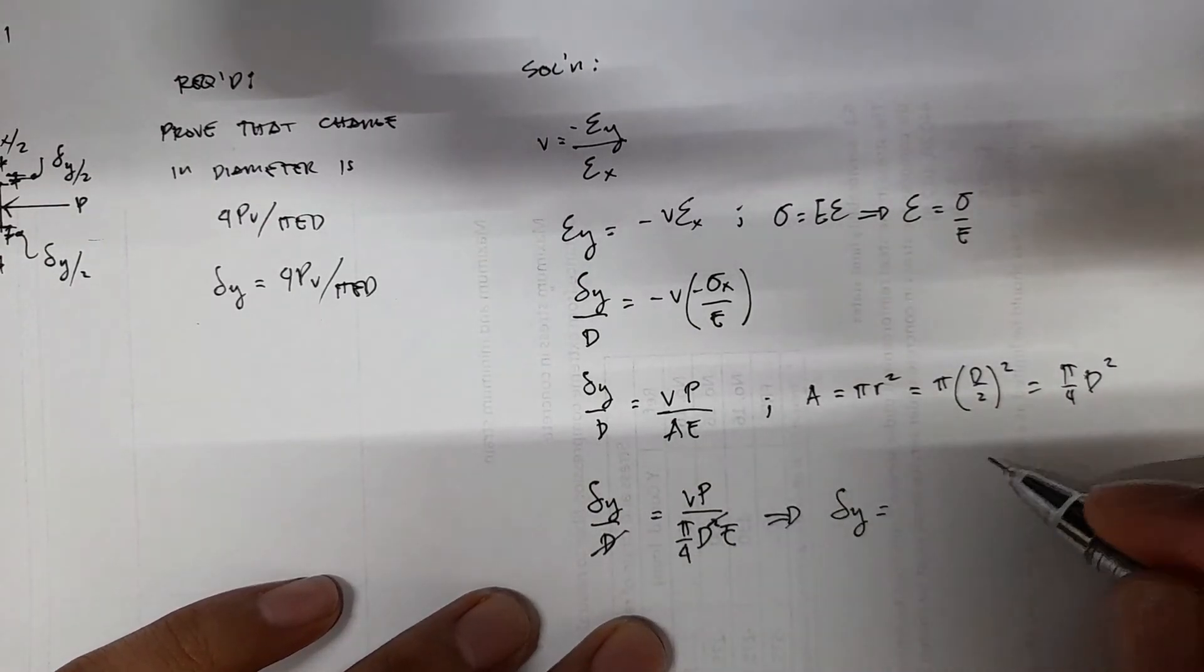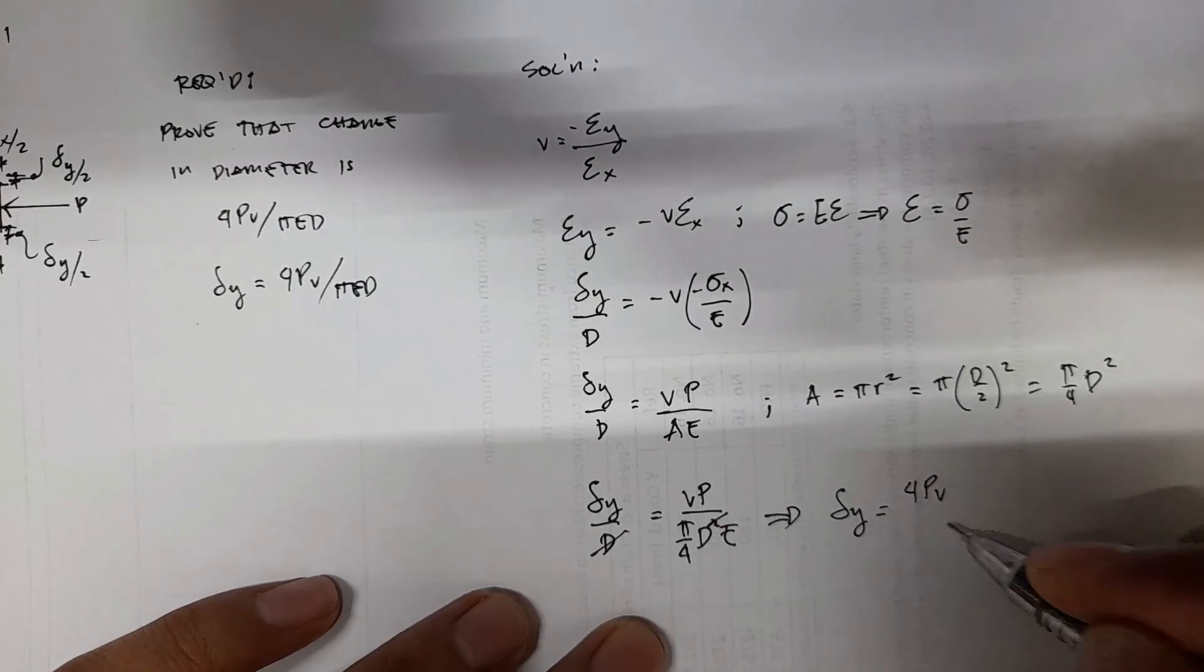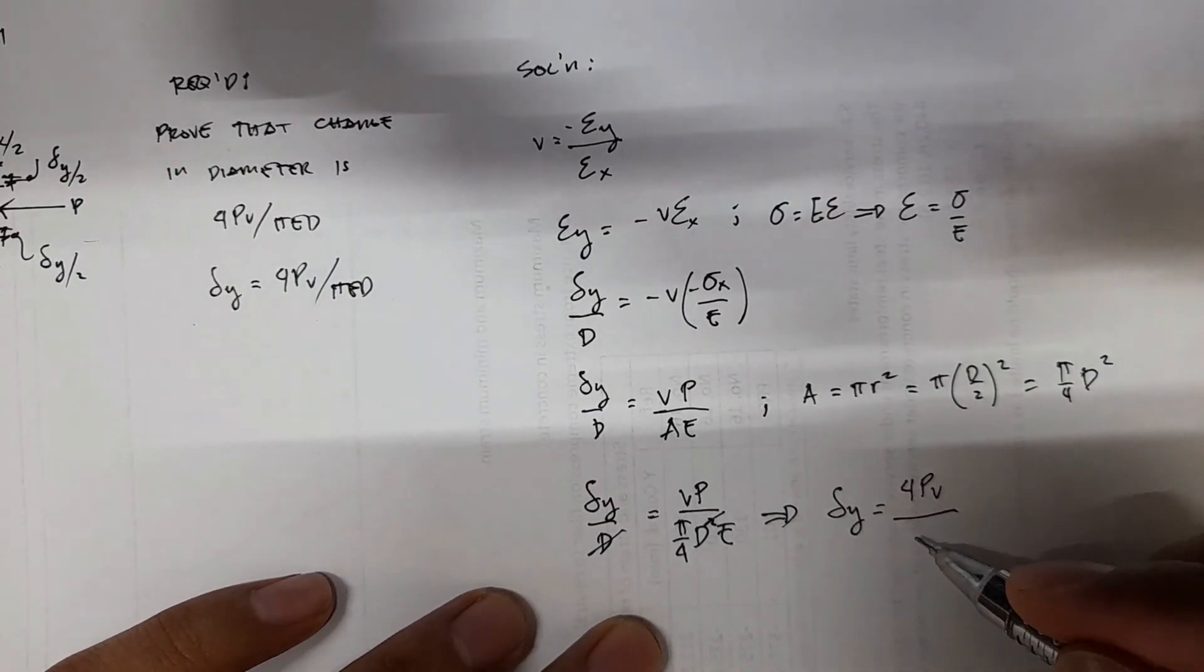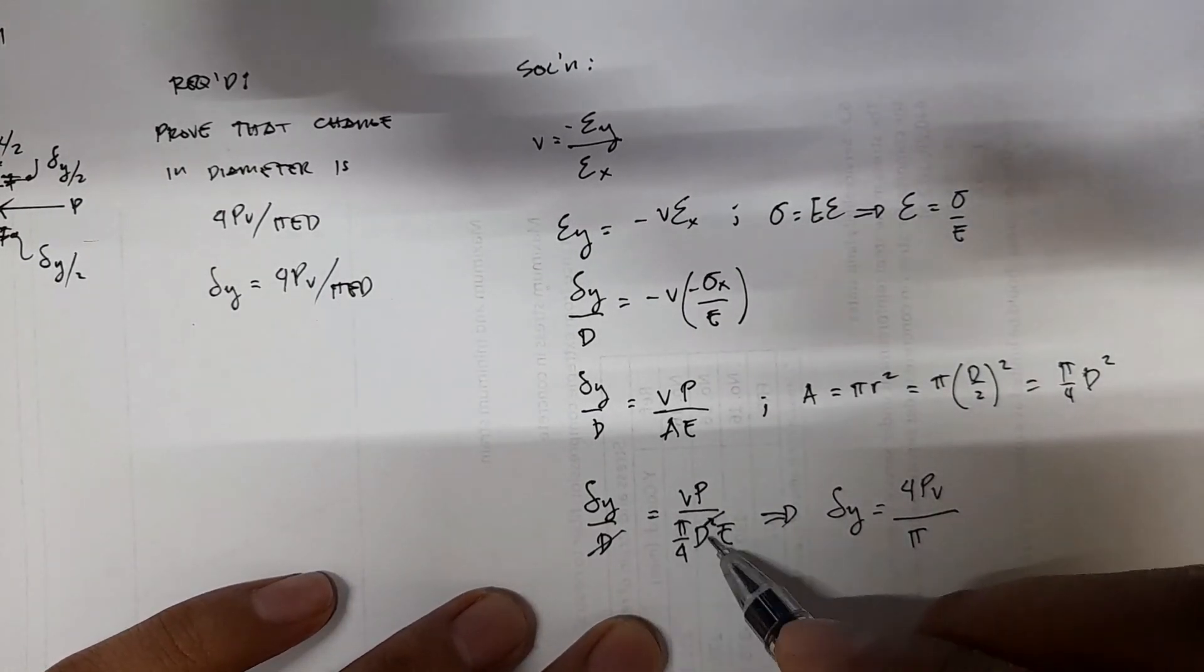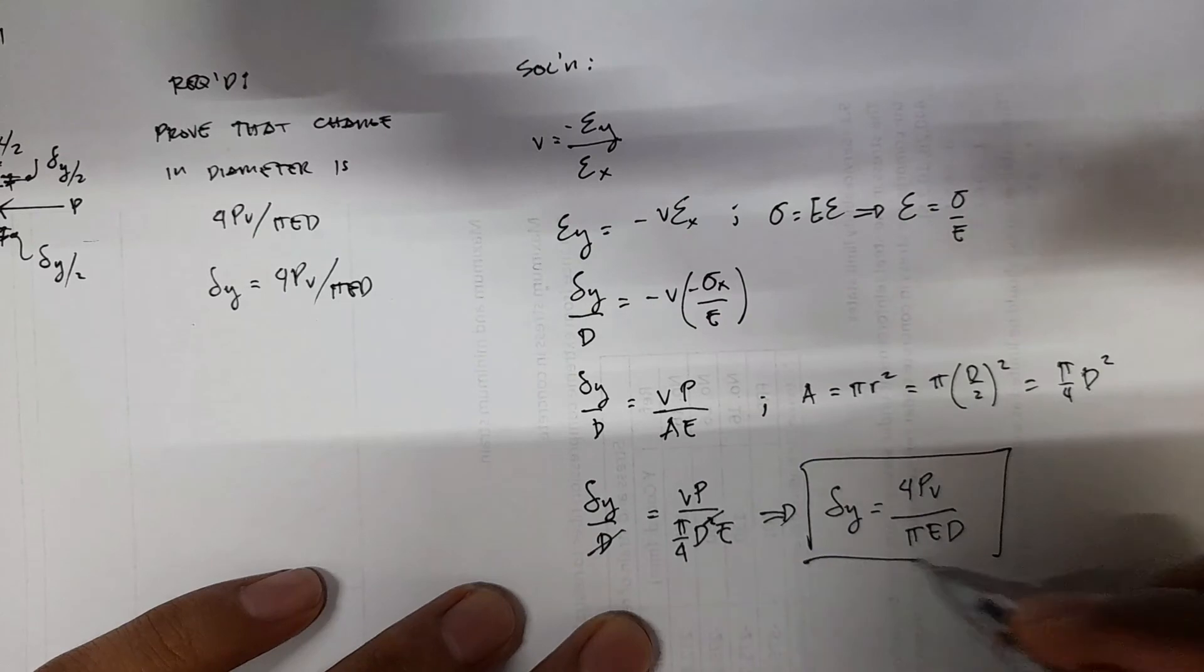You can have that on the numerator, the 4, 4PV or VP, which is the same. Then you have the π, and then the d that's not cancelled out, the d. So π, E, D. So that one.